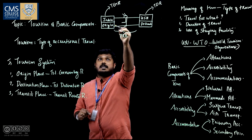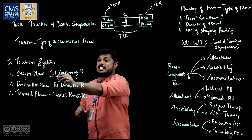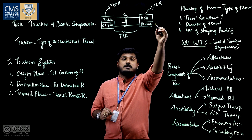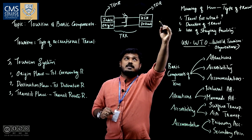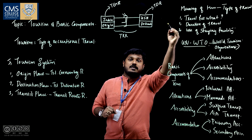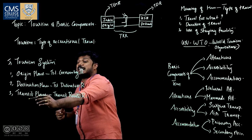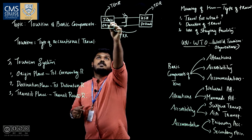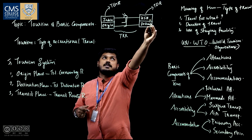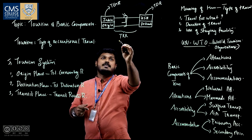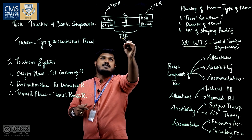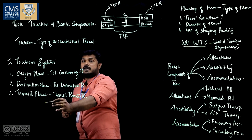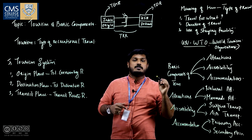The origin place is known as the Tourist Generating Region, abbreviated as TGR. The second place, destination place — the place a tourist needs to reach — is called the Tourist Destination Region, abbreviated as TDR. The last one, transit place, which is the place in between the Tourist Generating Region and Tourist Destination Region, is known as the Transit Region, abbreviated as TRR.